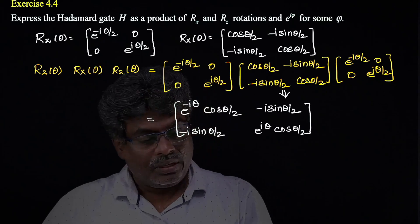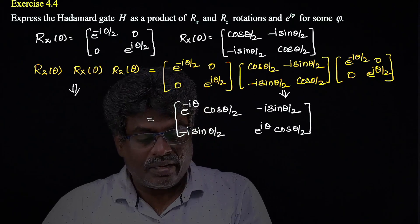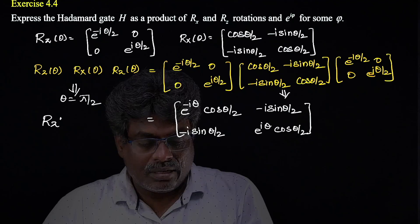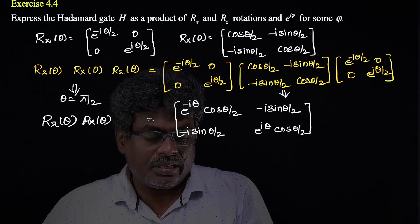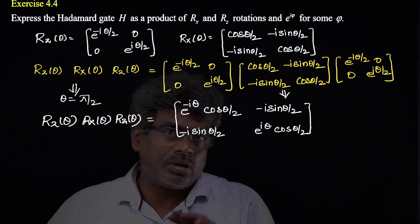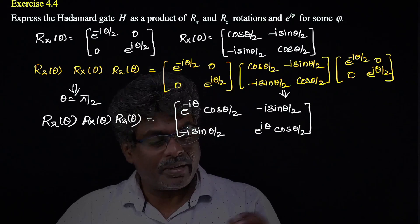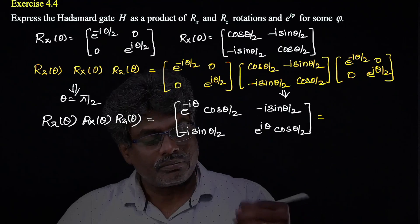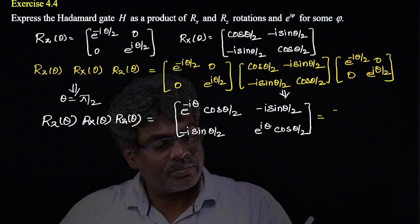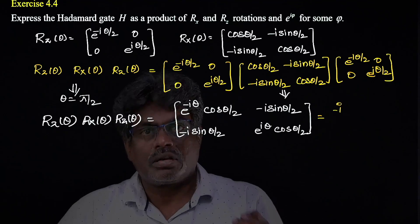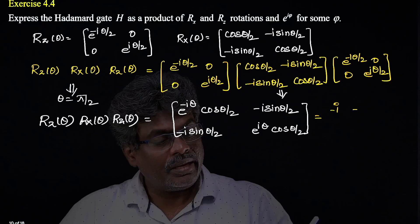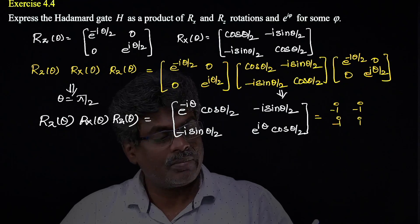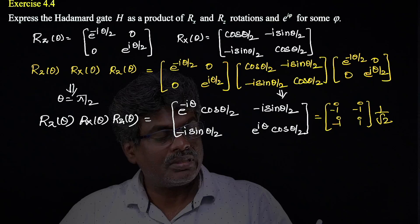Taking θ = π/2 in the product Rz(θ) · Rx(θ) · Rz(θ), the (1,1) element becomes e^(-iπ/2) = -i, times cos(π/4) = 1/√2. The off-diagonals similarly give -i/√2, so 1/√2 is a common factor throughout.